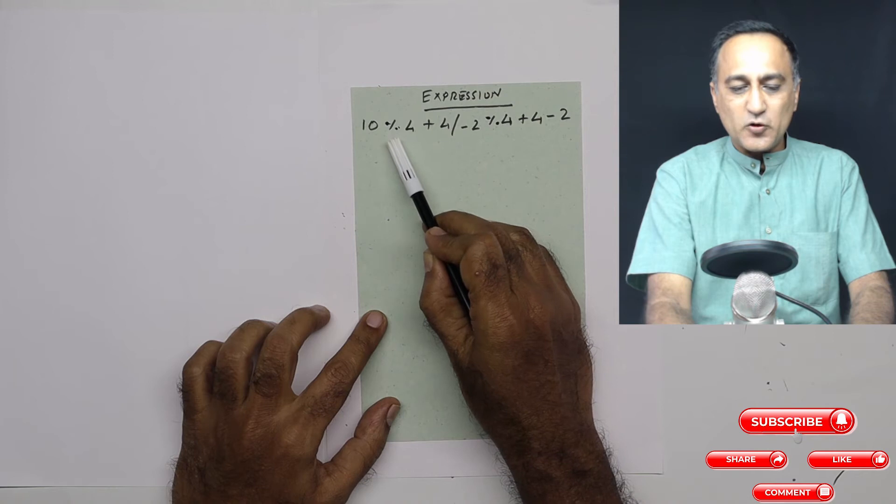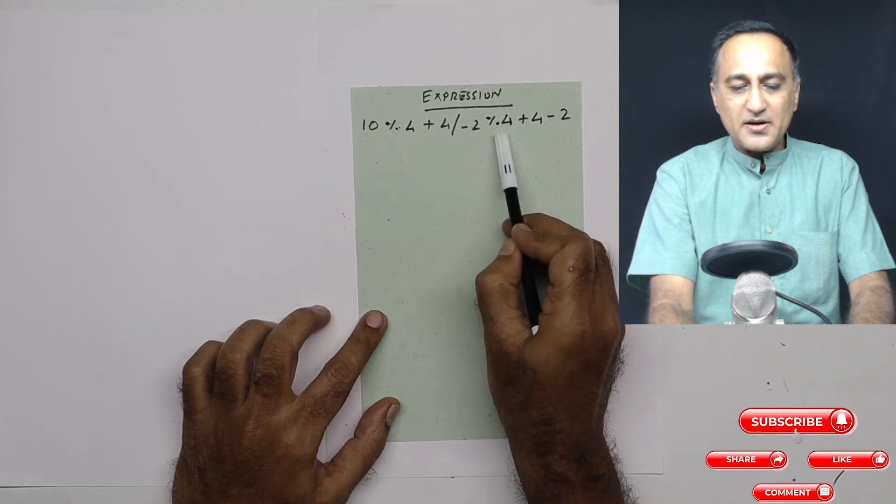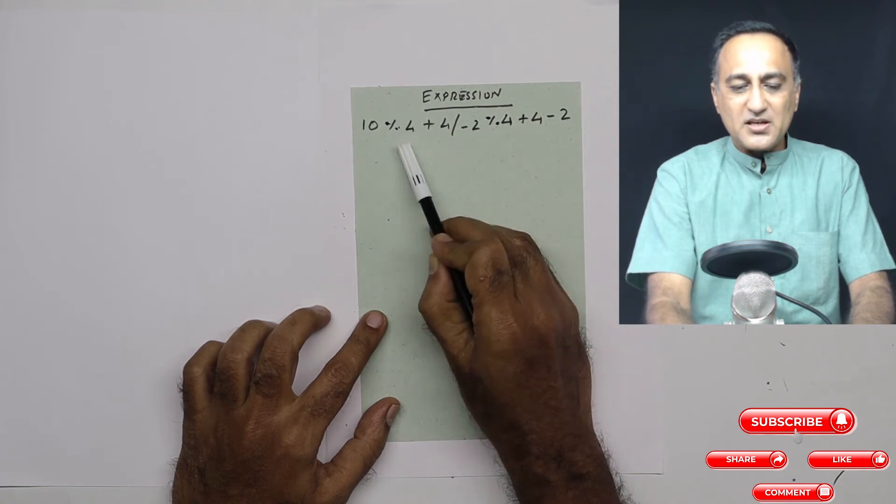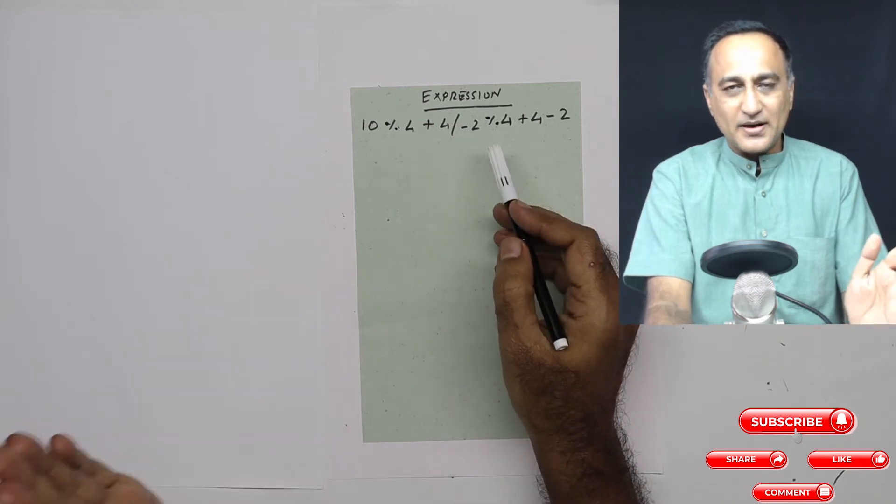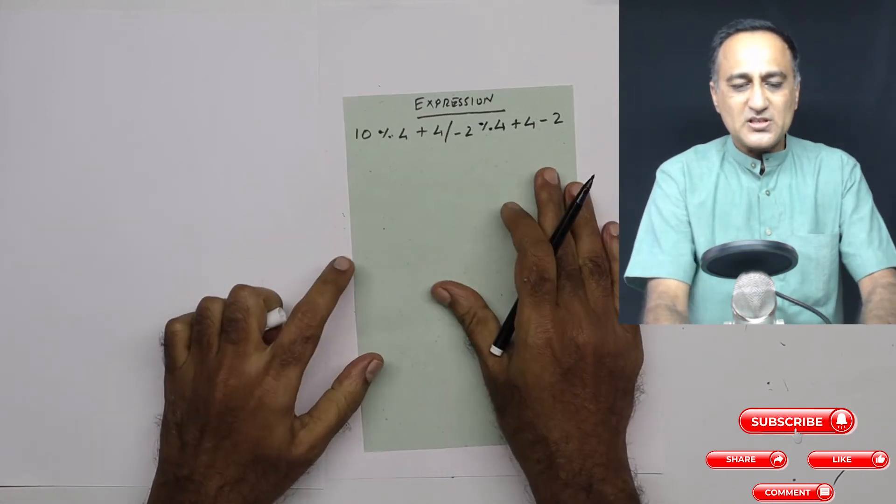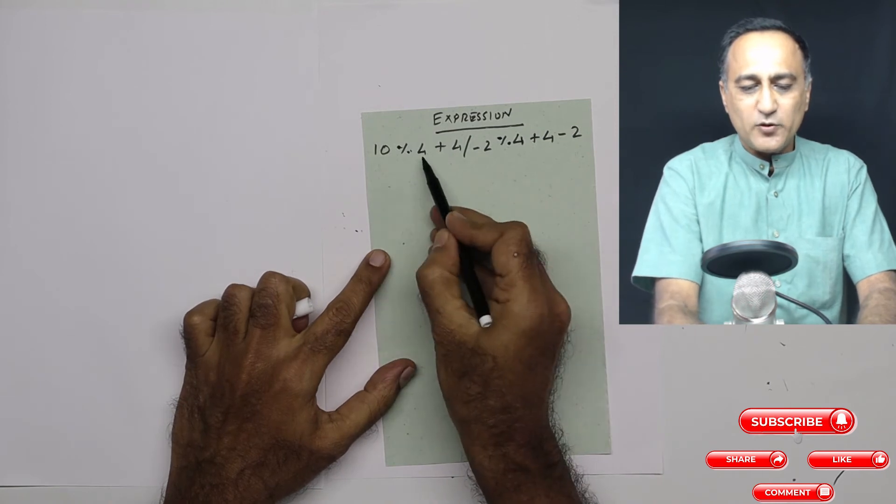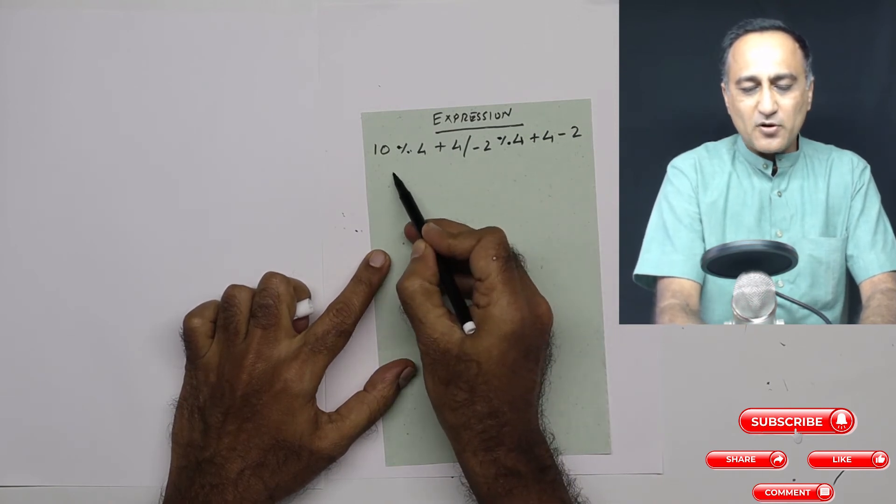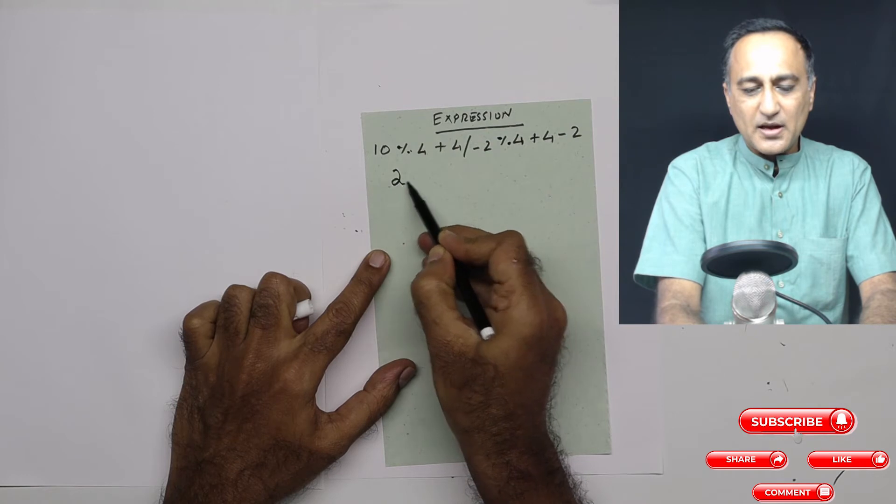the highest precedence operators are going to be mod, division, and mod here. Among these three, since all are at equal precedence, I will go from left to right. So since I'm going from left to right, first I will do 10 mod 4. 10 mod 4, the remainder happens to be 2.